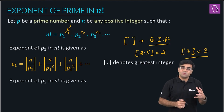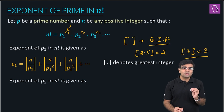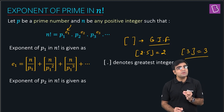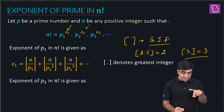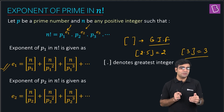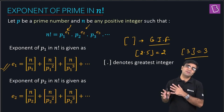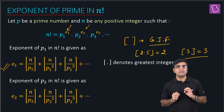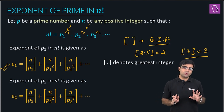Similarly, if I want the exponent of the prime number p2 in n!, which is e2, then by the same formula: e2 = ⌊n/p2⌋ + ⌊n/p2²⌋ + ⌊n/p2³⌋ + ... where once again the bracket denotes the greatest integer function. So using this formula, you can get the exponent of any prime number p in any factorial n.